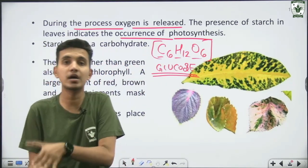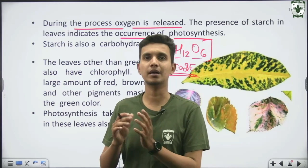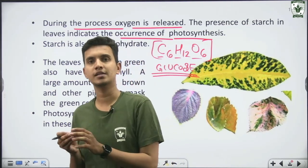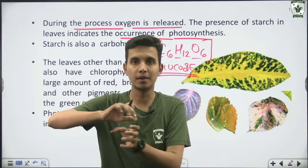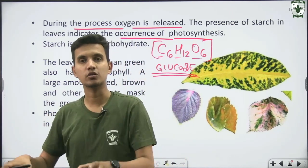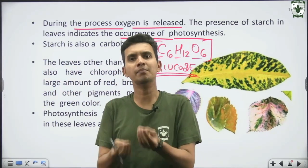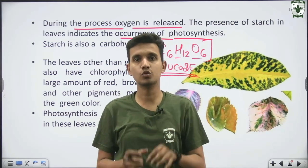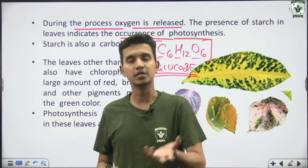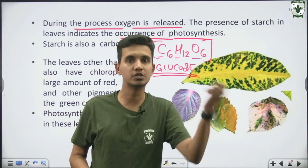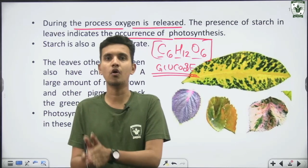Glucose is converted into starch for storage. Just like when we cook food at home and pack the leftovers for later, the plant stores extra glucose in the form of starch. When needed, the starch breaks down back into glucose so the plant can use it. The stored food in the plant is stored as starch.